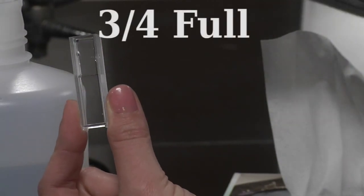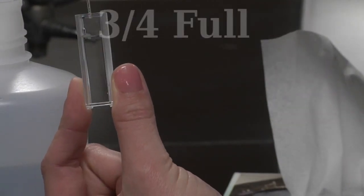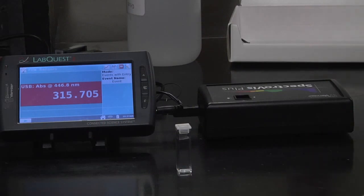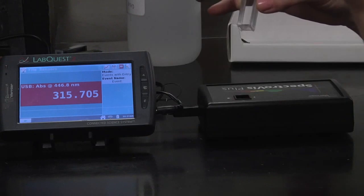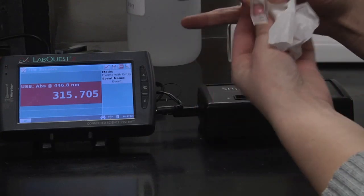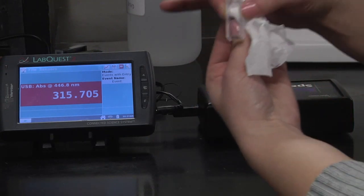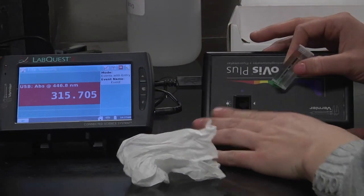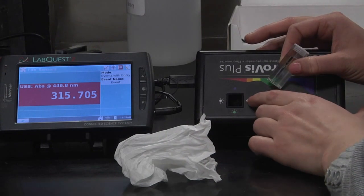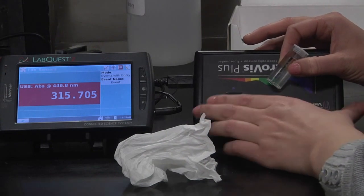To calibrate the LabQuest, we've already made our blank. What we're going to do is take a chem wipe and wipe the front and back, just in case your lab partner messed it up. Notice here how you have this little arrow. That's where the clear sides of the cuvette need to be, otherwise the light will go through the ridged portion. So ridges on the outside.